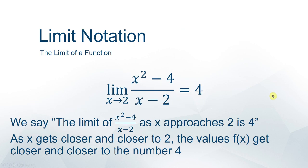For a specific example, the limit as x approaches 2 of x squared minus 4 over x minus 2 equals 4. We'd say: the limit of x squared minus 4 over x minus 2 as x approaches 2 is 4. This means that as x gets closer and closer to 2, the value of the function gets closer and closer to the number 4.